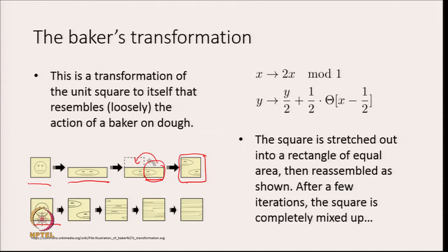After one transformation, the two eyes of a little figure which were close together initially are now separated — one eye is on the lower part of the square and the other is on the upper part. If you do it again, things get stretched out further in the x direction. Apply it once more and you have a completely mixed-up figure, but the area has remained the same.